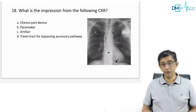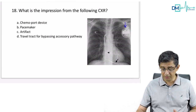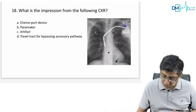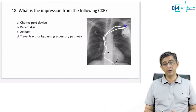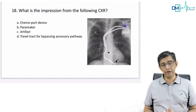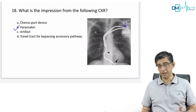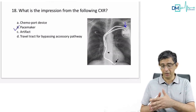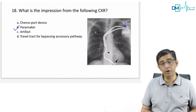The next question shows an impression from a chest X-ray of a device with two wires — one going to the atria, one to the ventricles. This is a pacemaker or an implantable cardioverter-defibrillator (ICD), deployed on the left side of the chest with a visible scar. This device is mainly used for treatment of bradyarrhythmias.